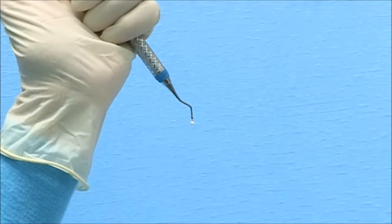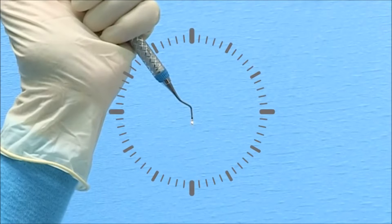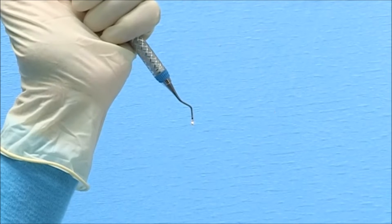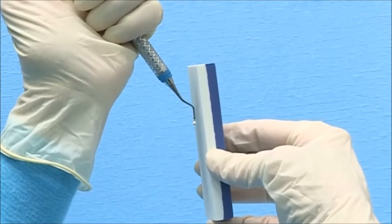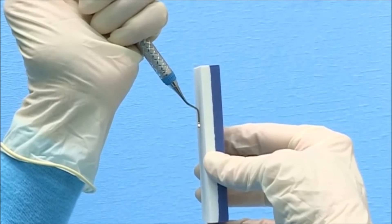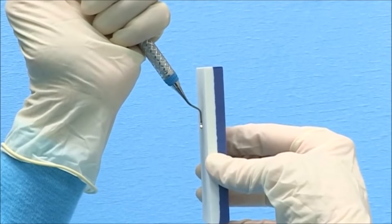Using the clock as a guide, hold the instrument vertically with the lower terminal shank positioned at 12 o'clock. Place the lubricated side of the stone against the right lateral surface of the blade. Initially place the stone at 12 o'clock.